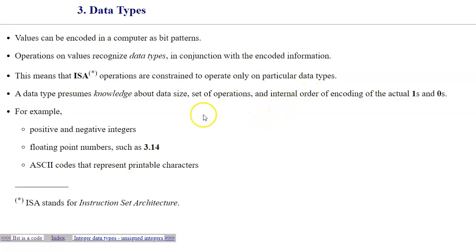Data type resumes knowledge about the data size and comes with a set of operations that would be typically available for this specific data type. Basic or primitive or fundamental data types include positive and negative integers. Small 8-bit size integers represent characters as well, as well as floating point numbers, such as 3.14 real number scale.